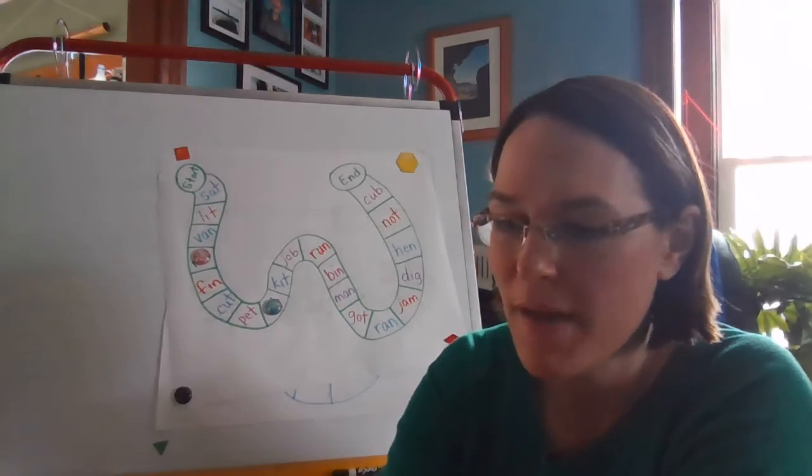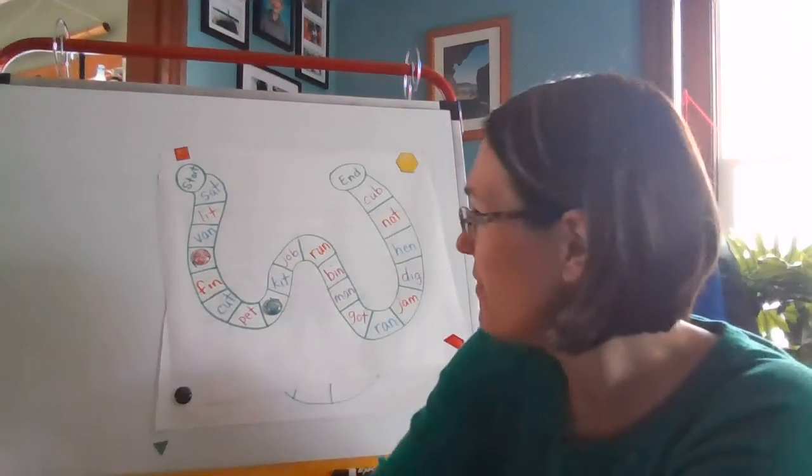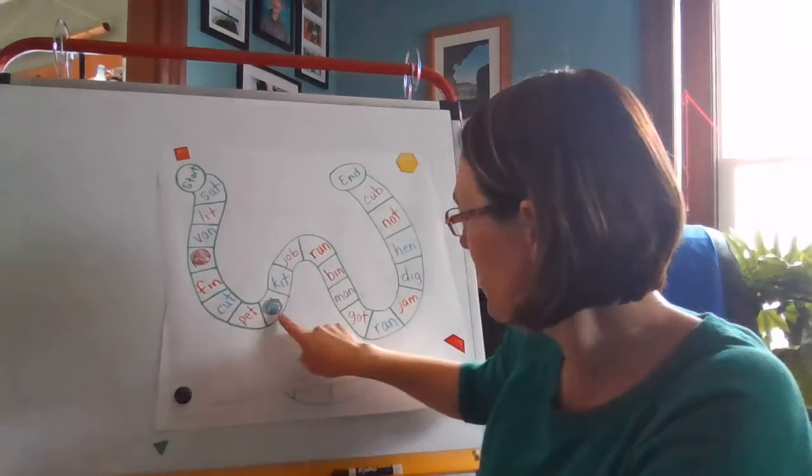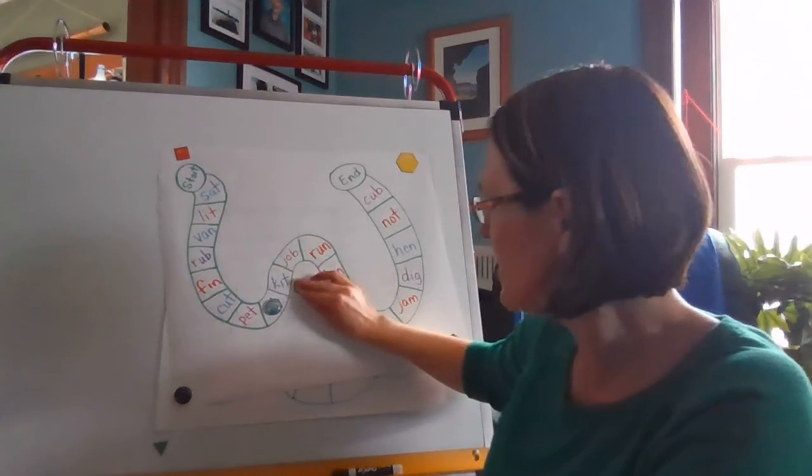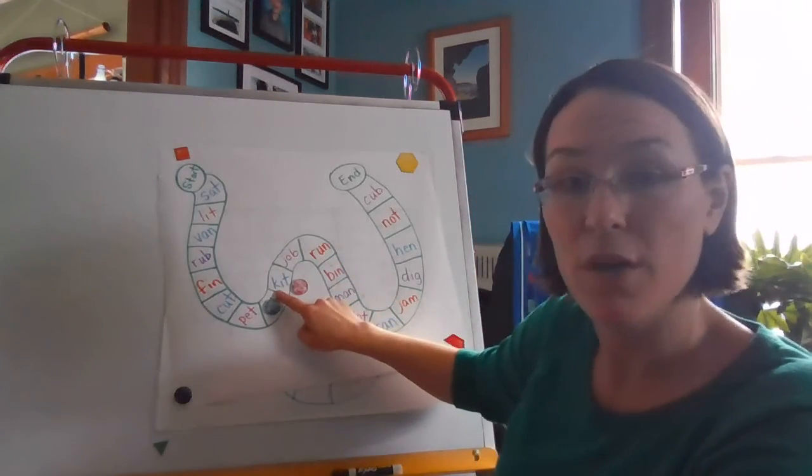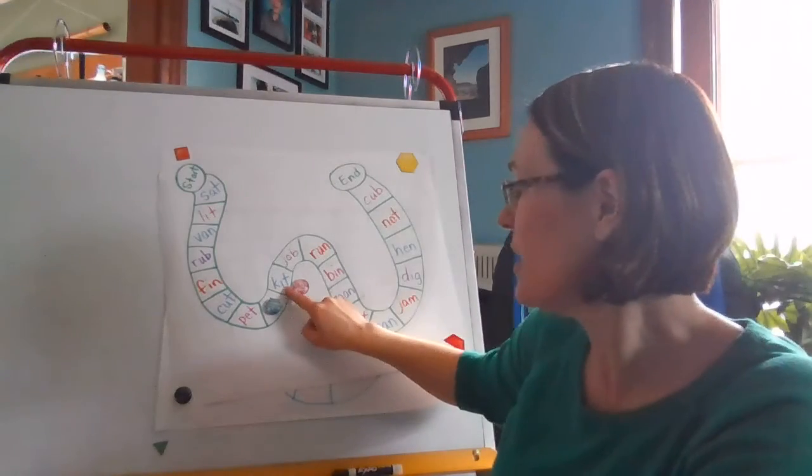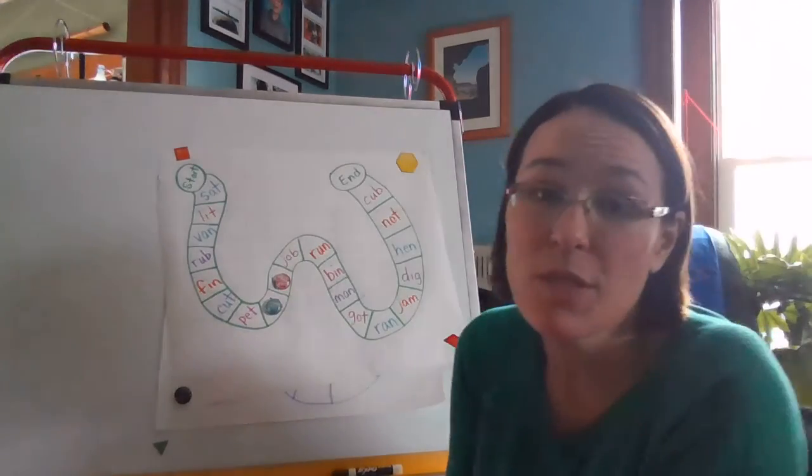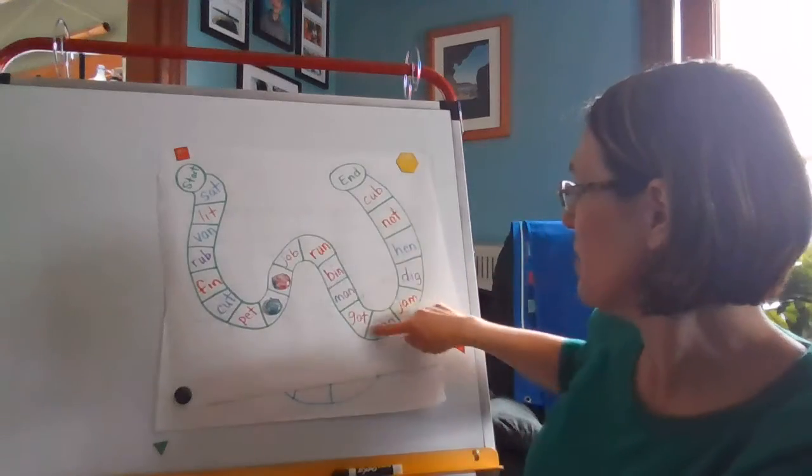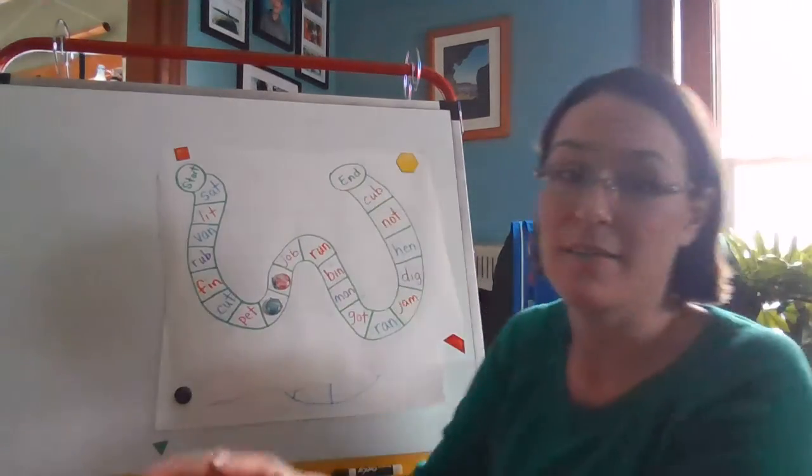Oh, making a comeback. Five. One, two, three, four, five. Let's see what that one is. C-I-T. Ket. So you just keep taking turns rolling all the way through until someone gets to the end.